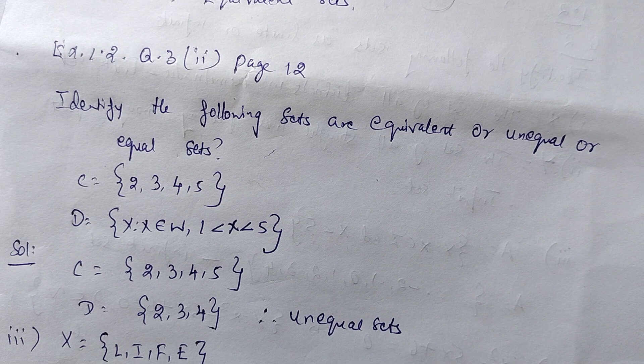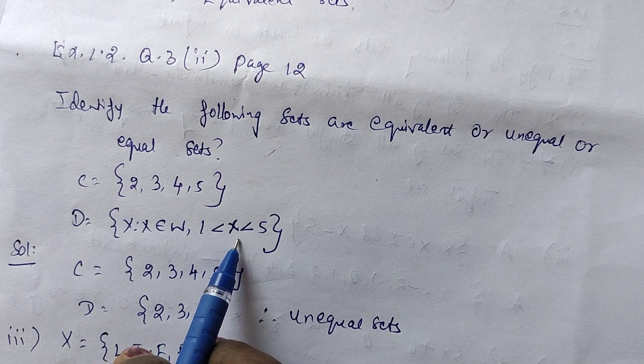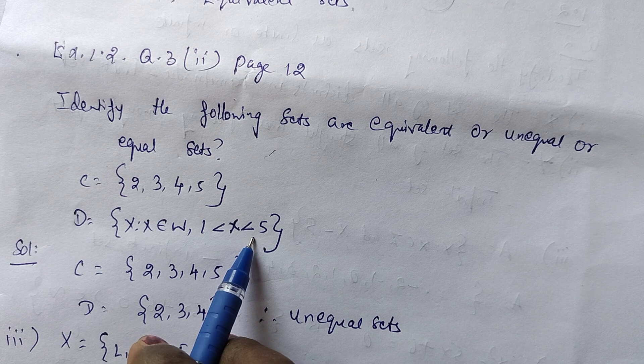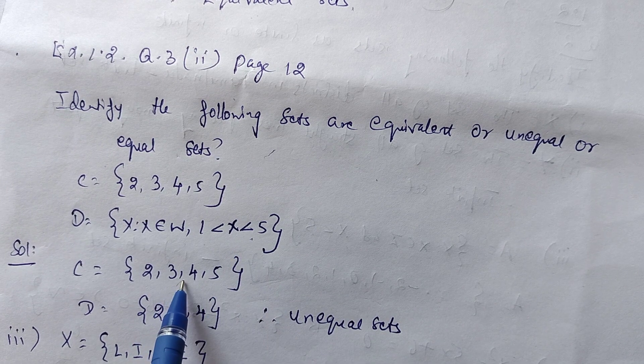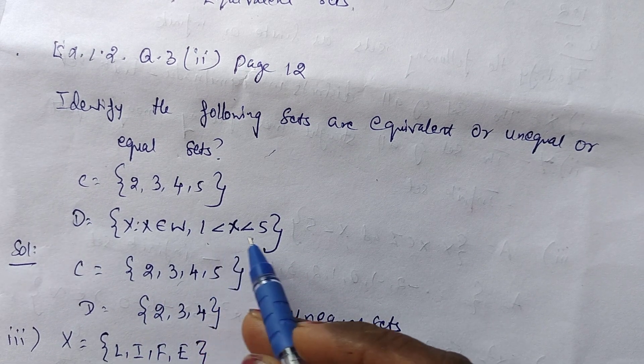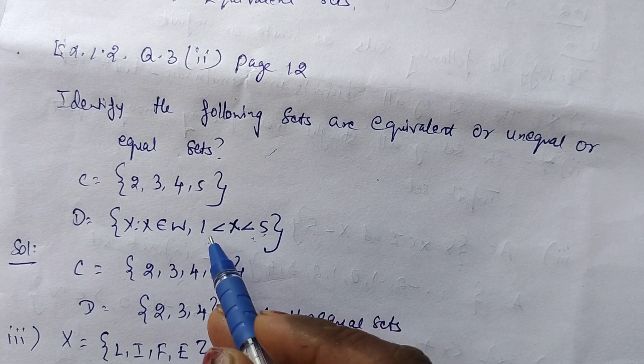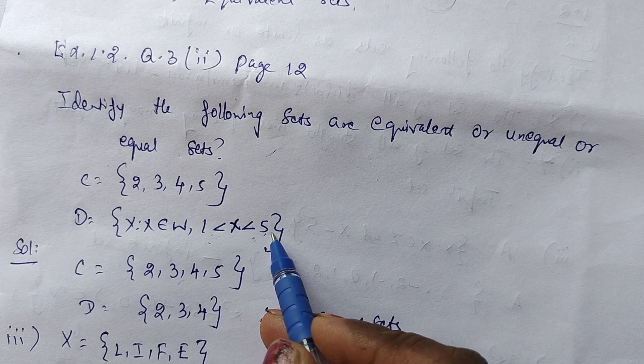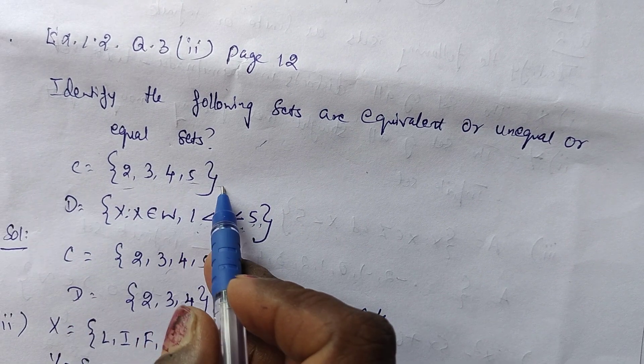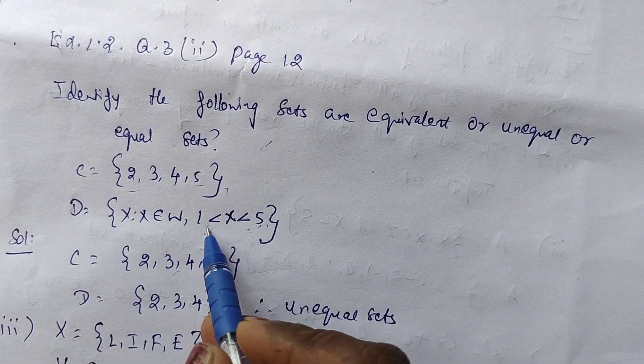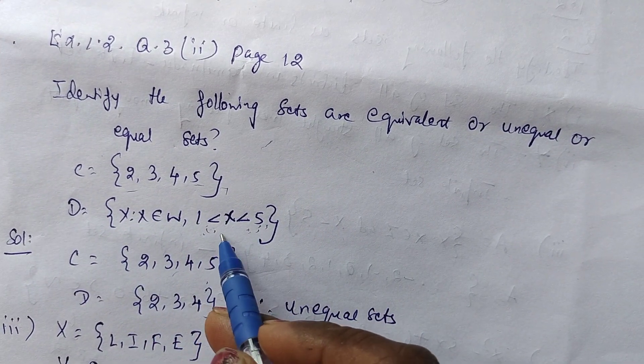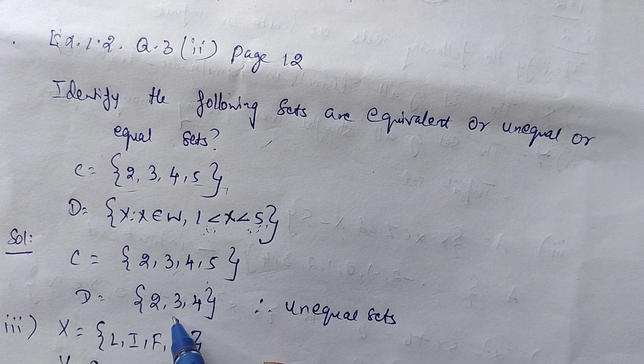C equals {1, 2, 3, 4, 5}. D, the middle values equal 2, 3, 4.